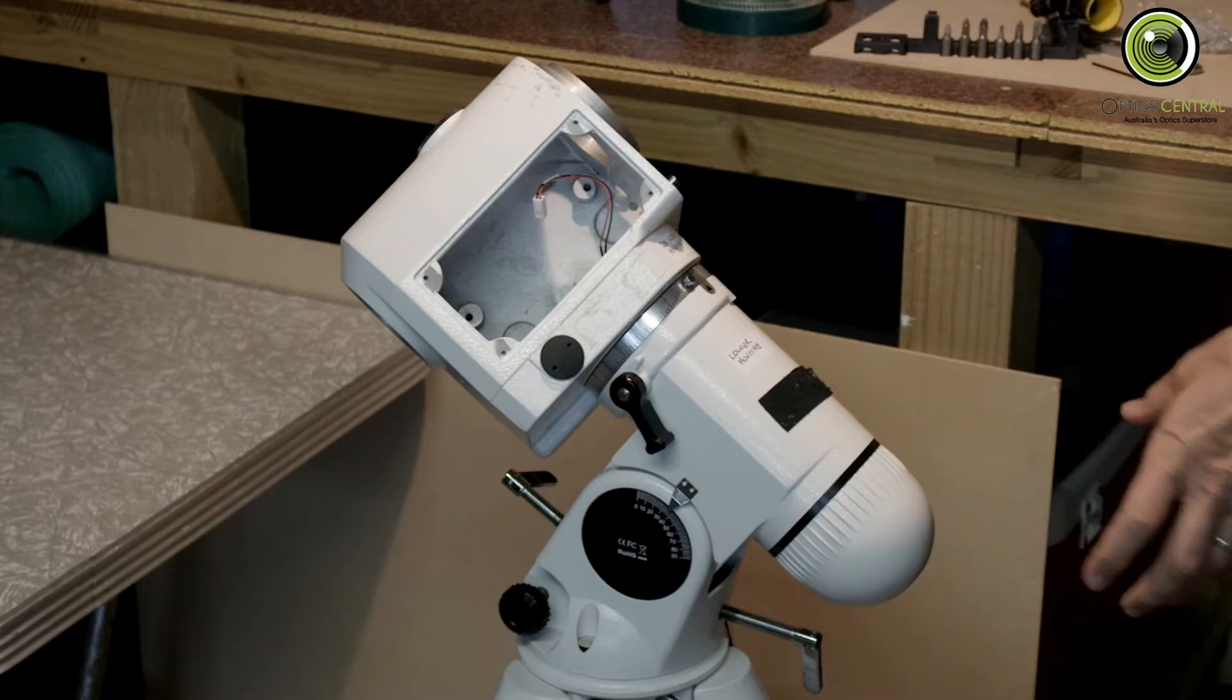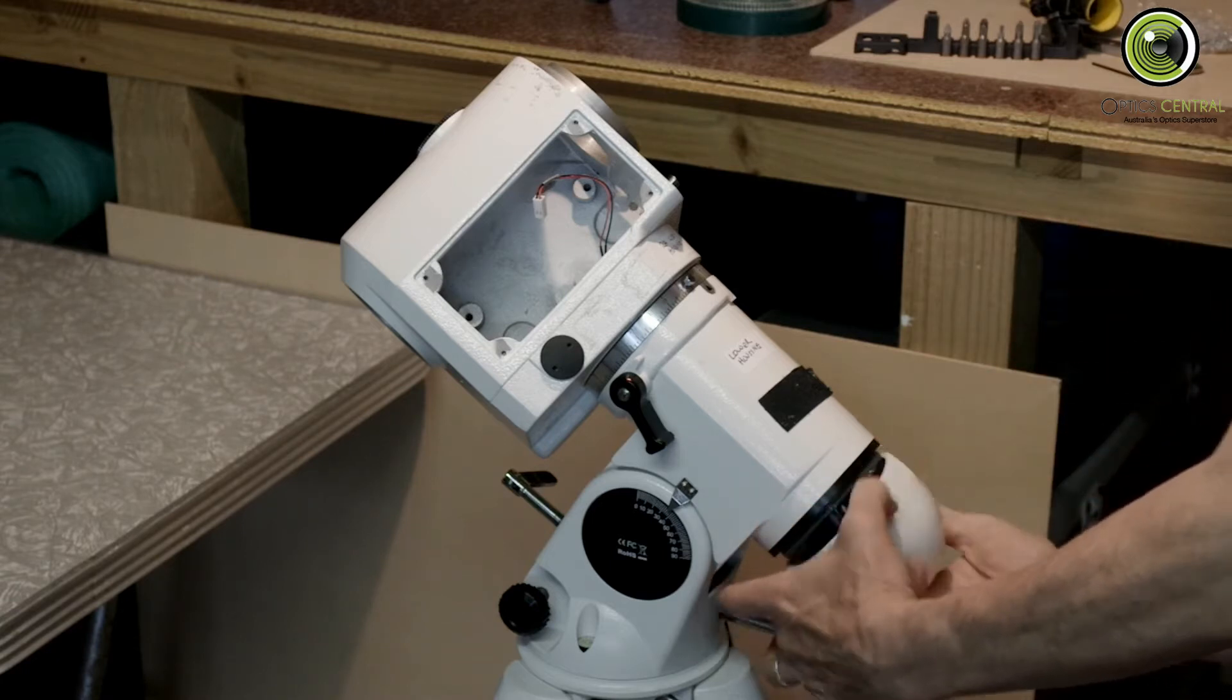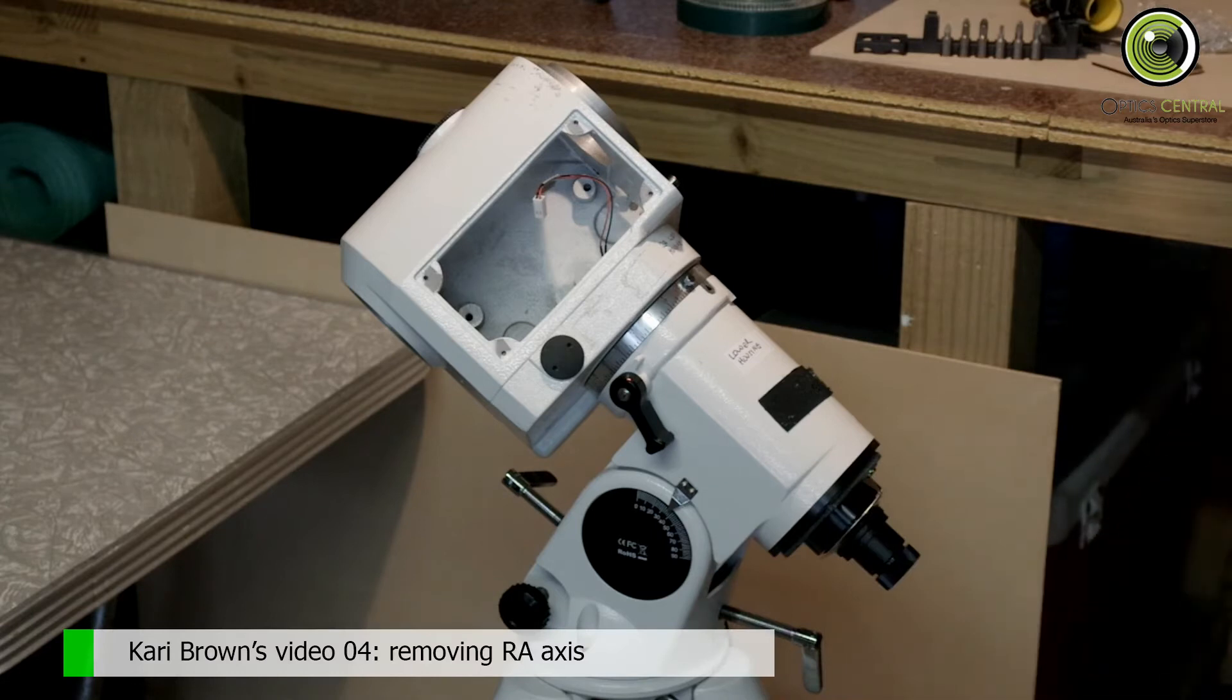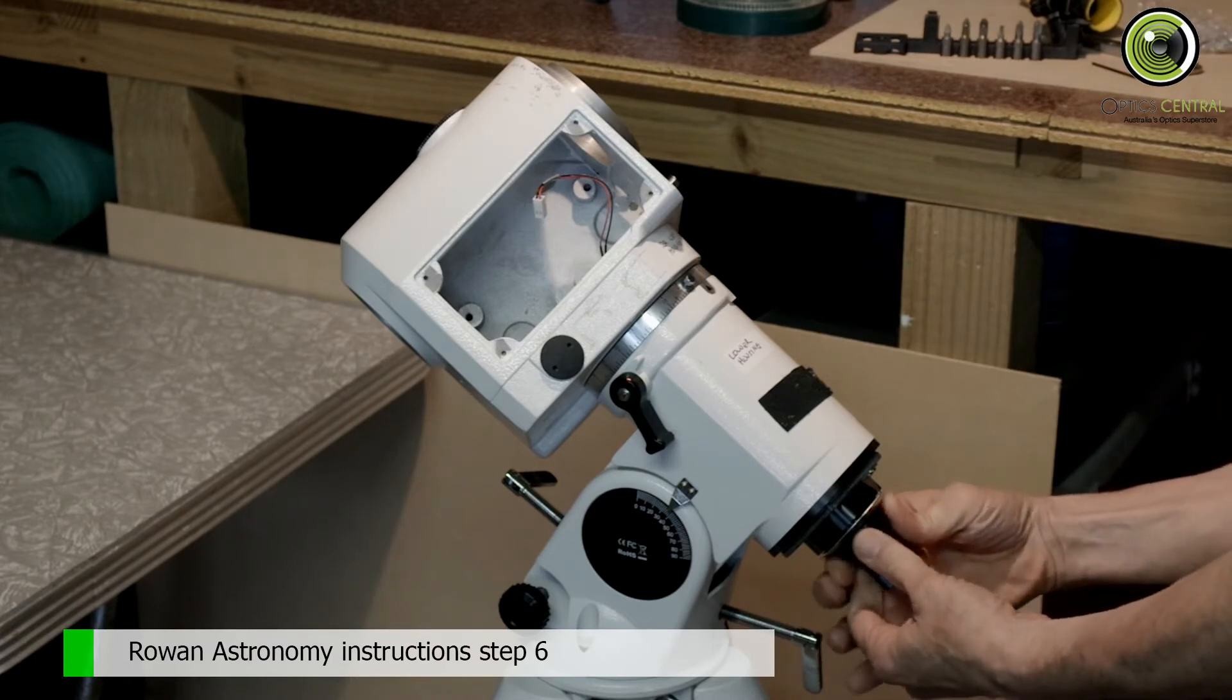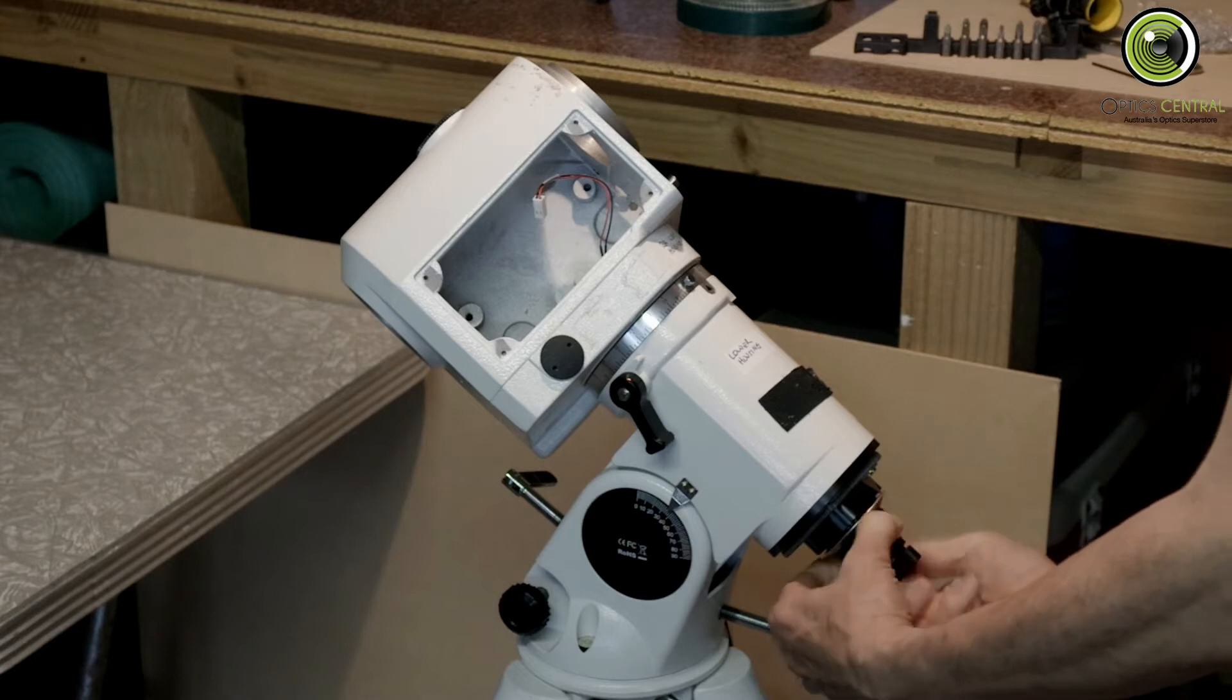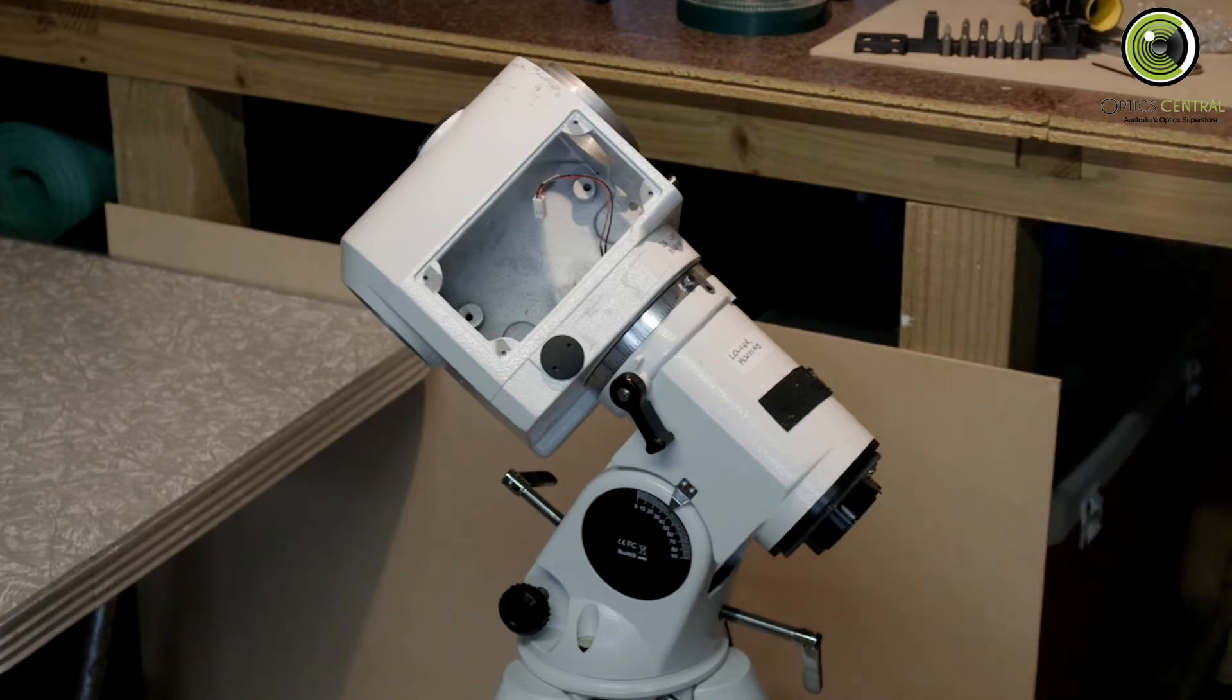The first thing I have to do is remove the polar scope. That's underneath here. The polar scope is easy to get rid of, we'll just spin that. It comes out fairly easily. There's the polar scope. It can go to one side, I'll put that in a little plastic bag eventually.